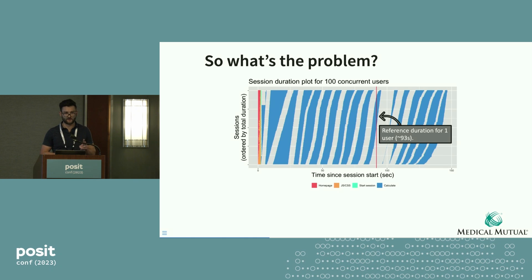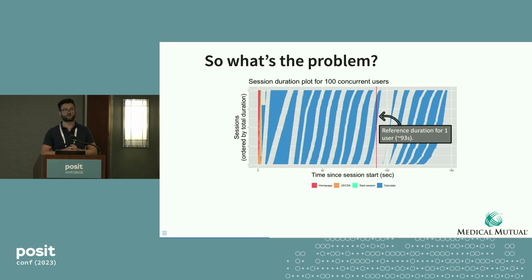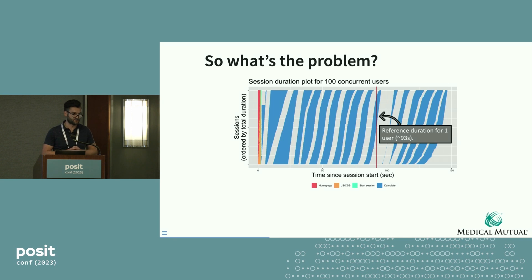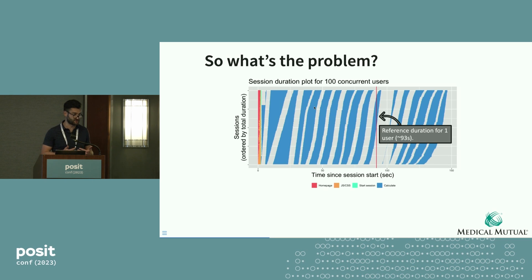There are two things that stand out in this plot. One is inconsistency in when users are finishing the workflow — from a UX perspective, the same workflow should take people the same amount of time. Another thing to notice is that the time to complete the workflow has gotten longer. In the worst case, some users are finishing close to 150 seconds, as opposed to the 93 seconds for one user. That's no bueno.